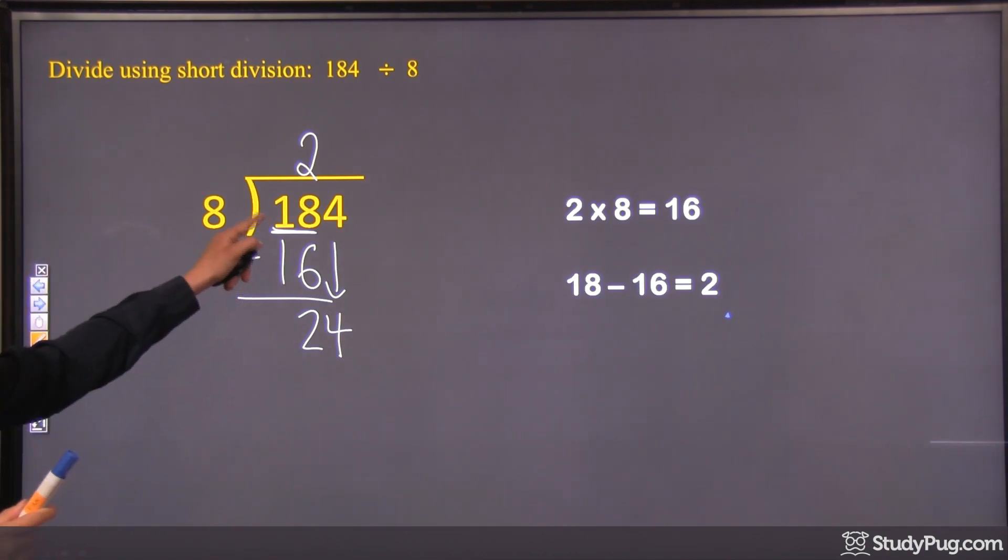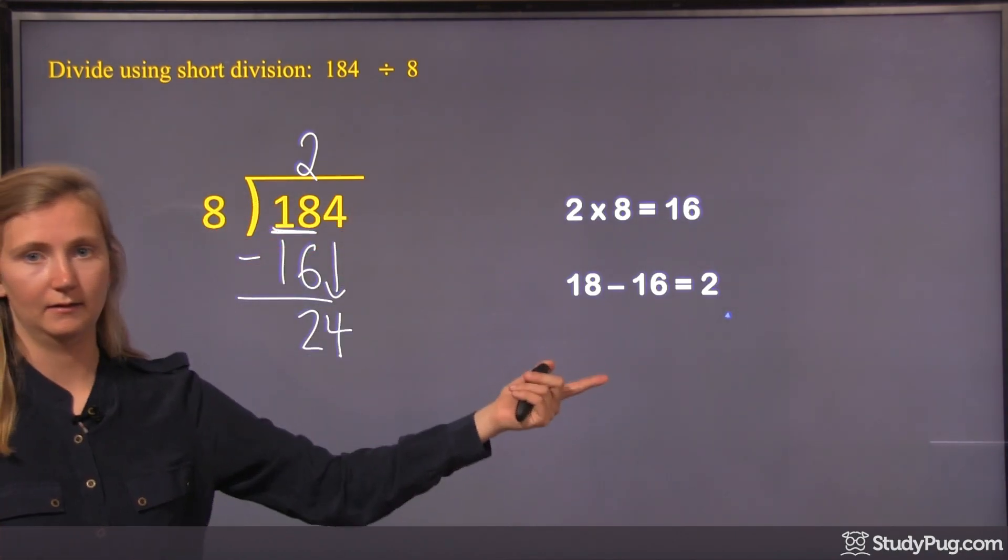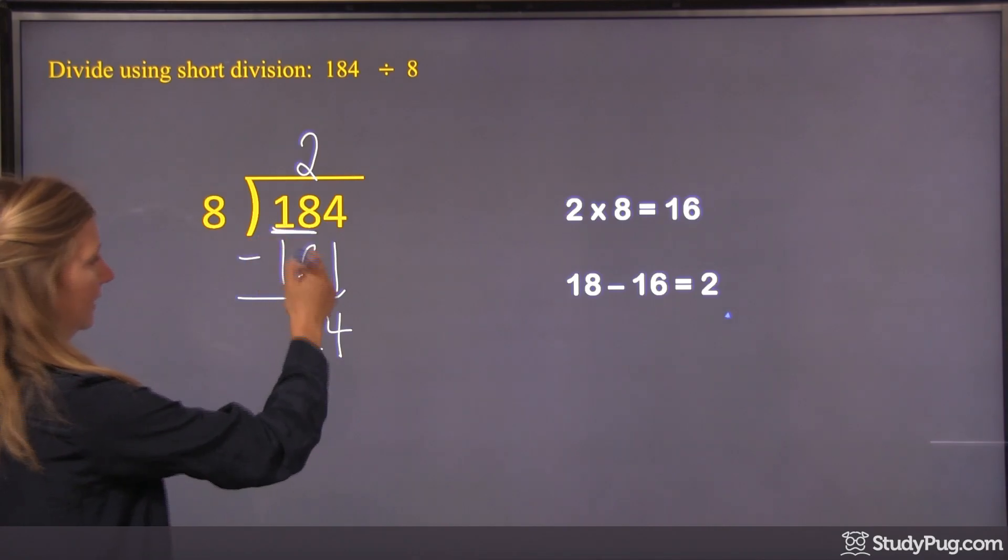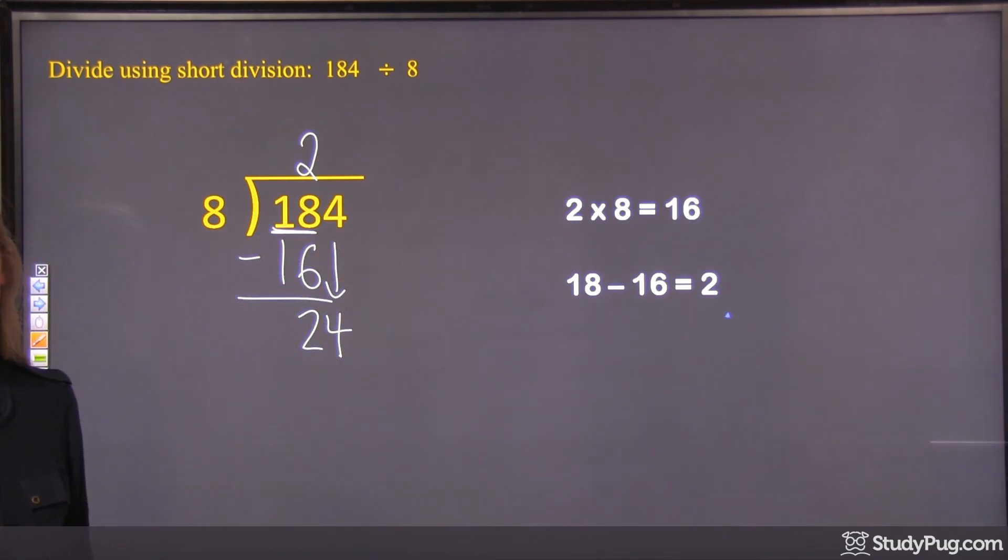We're going to do the subtraction first in our head. So we do 18 divided by 8. Well, we get 2, right? And we know that 2 times 8 is 16. So in our head, we do 18 minus 16. We get 2.